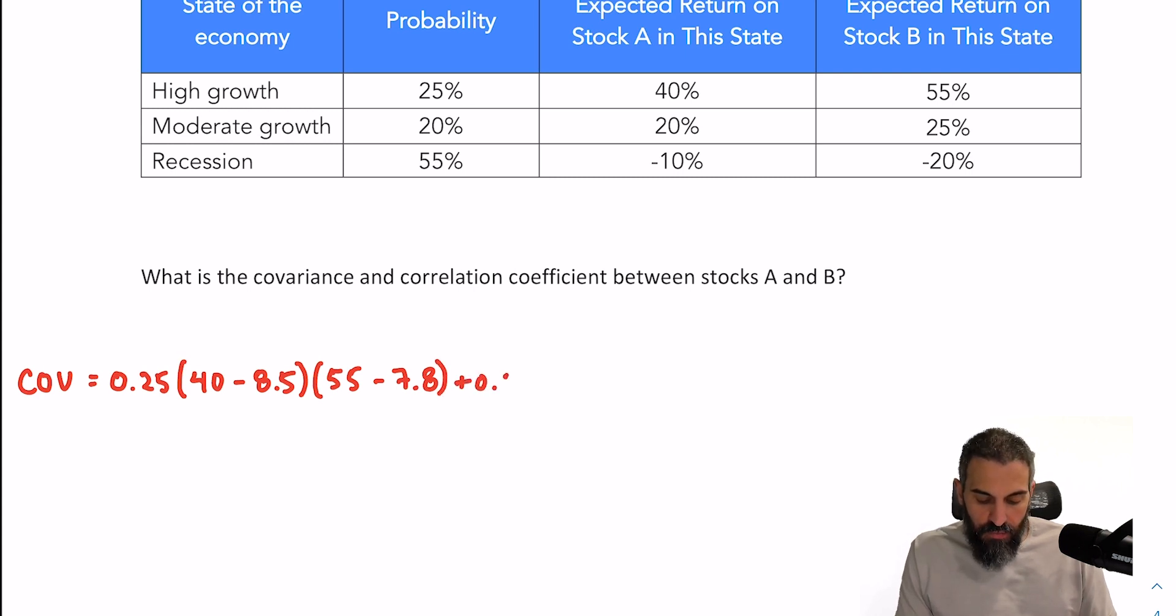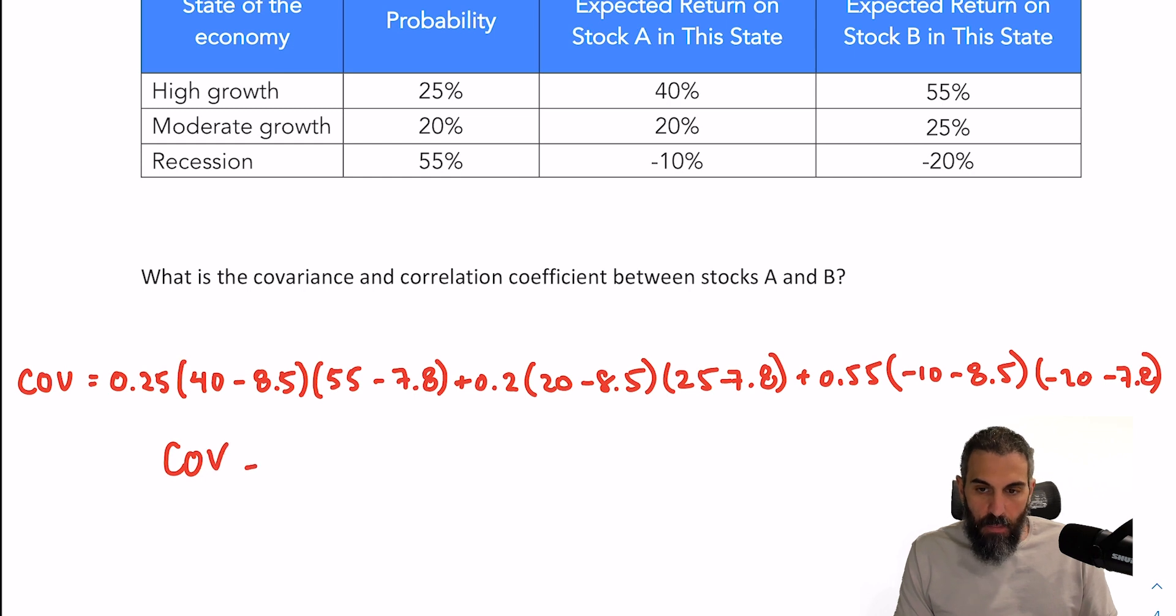So plus 0.2. Now stock A would be 20 minus 8.5, stock B would be 25 minus 7.8. And then for the last one, 55% probability, stock A would lose 10% minus the expected, stock B would lose 20% minus its expected.